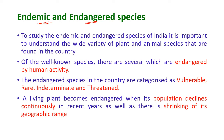To study the endemic and endangered species of India, it is important to understand the wide variety of plants and animal species found in the country. Of the well-known species, several are endangered by human activity. Endangered species in the country are categorized as vulnerable, rare, indeterminate, and threatened species. A species becomes endangered when its population declines continuously and its geographic range shrinks.